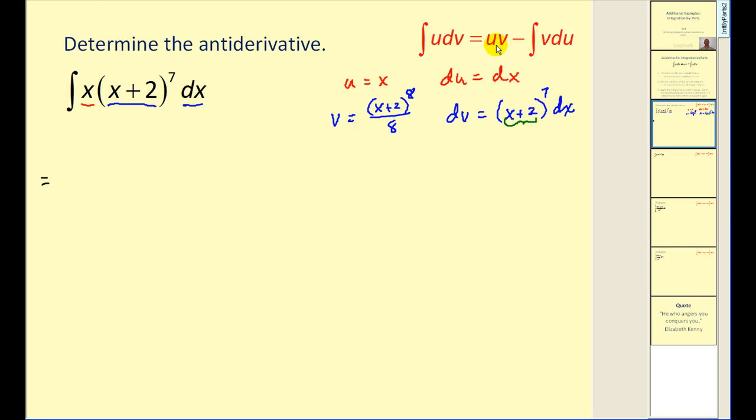So this is equal to u times v. So when I write this product, I'm going to rewrite it as 1 8th x times x plus 2 to the 8th power minus the integral of v du. Well, here's our v and du is equal to dx.